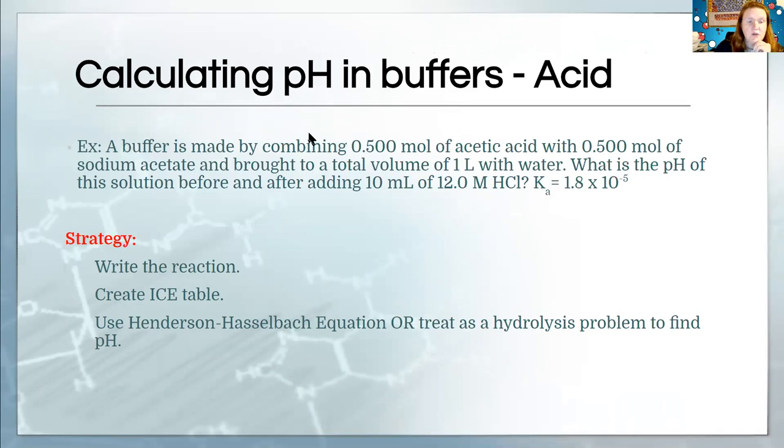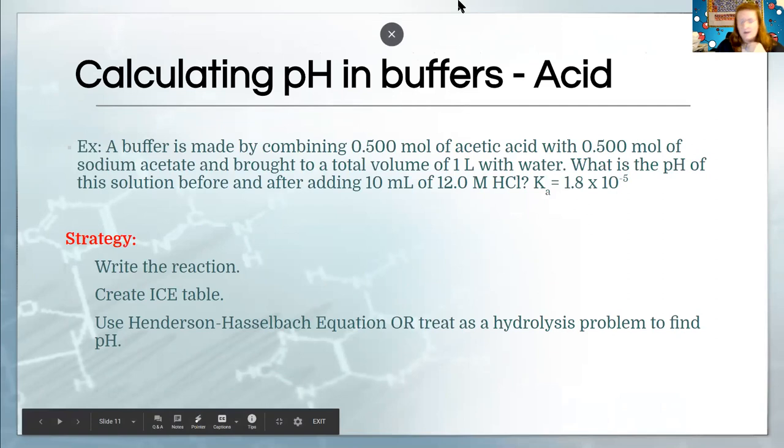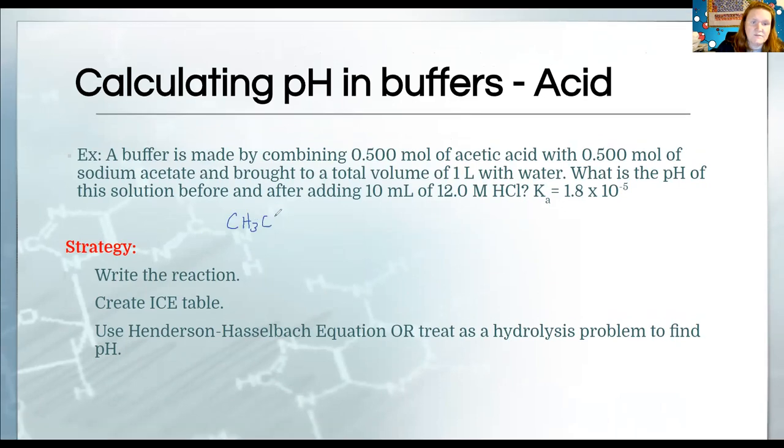So here is an example problem. It's a little faster than the other way we did it, right? What we're going to do is the same reaction that we looked at before - acetic acid. In this case we have 0.500 moles and 0.500 moles. We call this an equimolar buffer because you have the same number of moles of the conjugate and the parent.